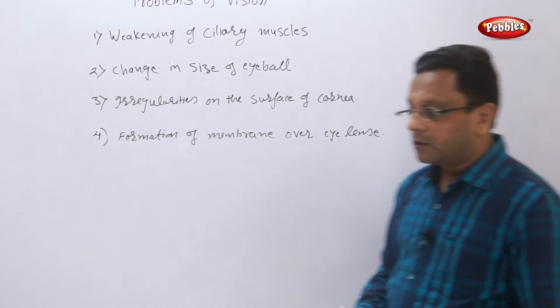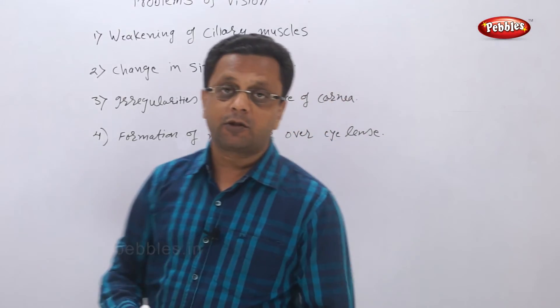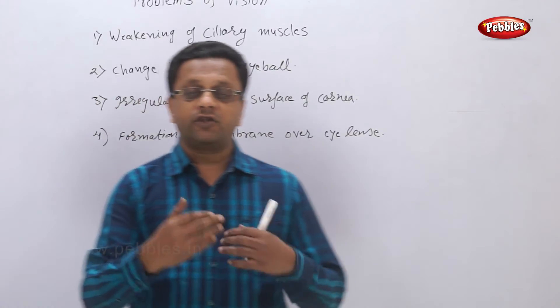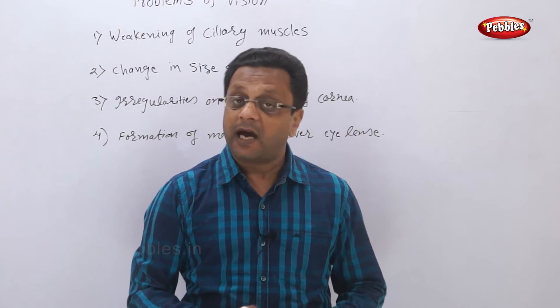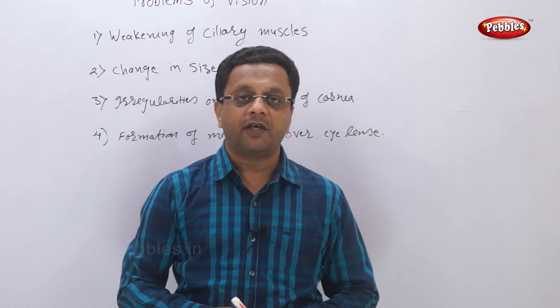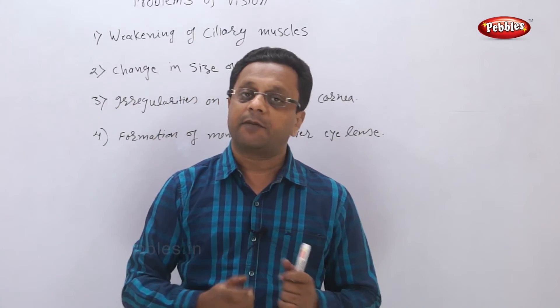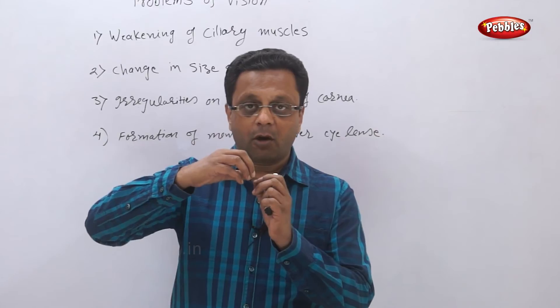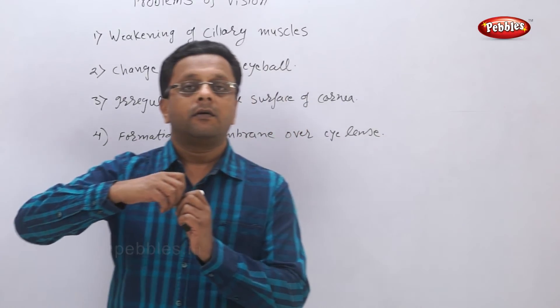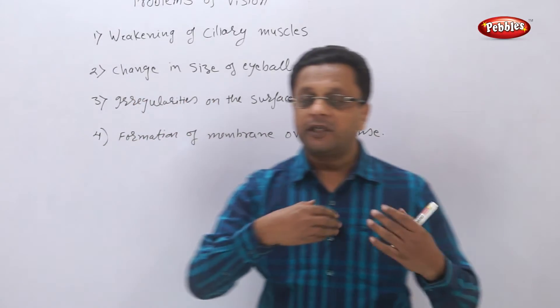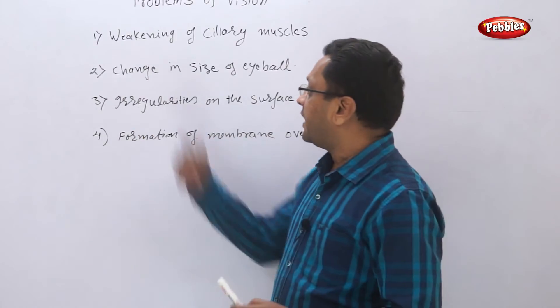First of all, weakening of ciliary muscles - that means the muscles that are responsible to change the focal length of the eye lens. If those muscles are weak, then the lens cannot adjust the focal length properly. The lens cannot become thick or thin with respect to the distance of the object.